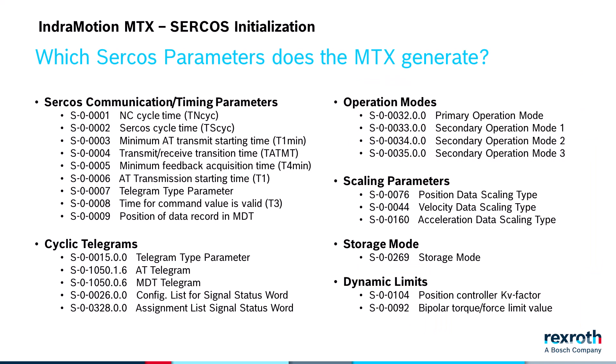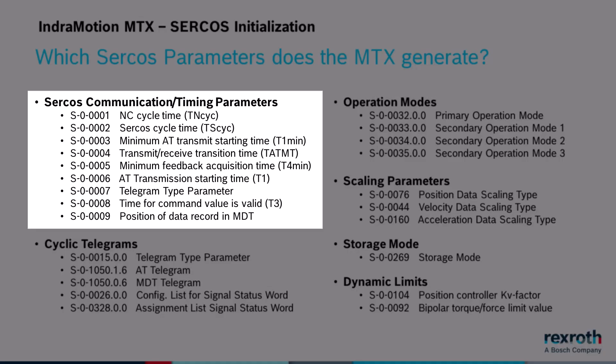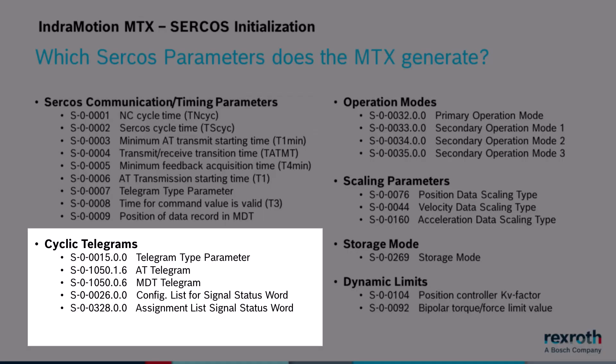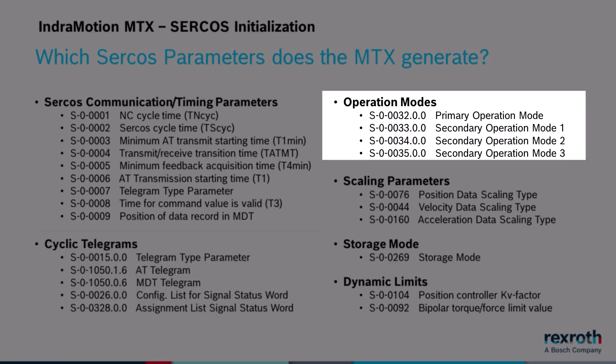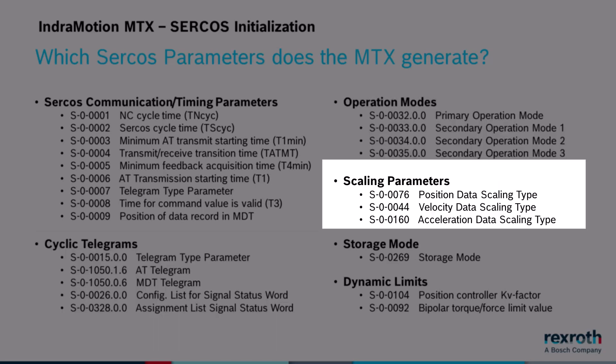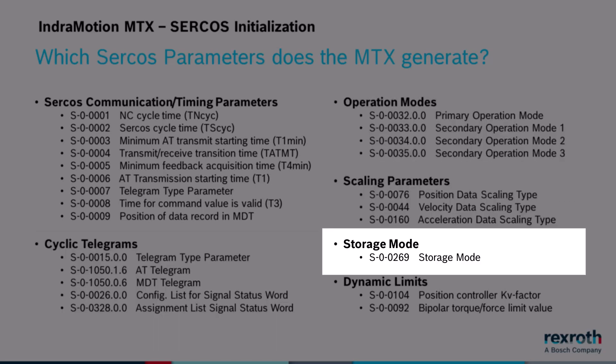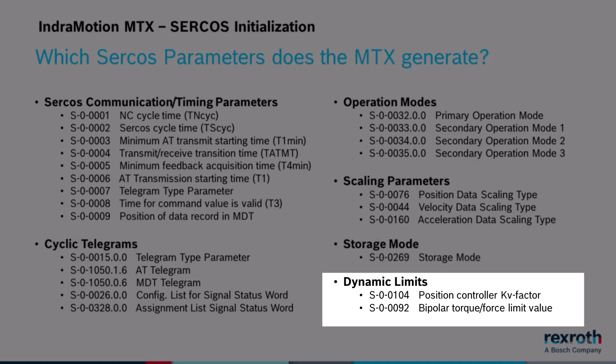The control automatically generates the parameter values for the following groups: CIRCOS communication/time and parameters, cyclic telegrams, operation modes, scale-in parameters, storage mode, and dynamic limits.